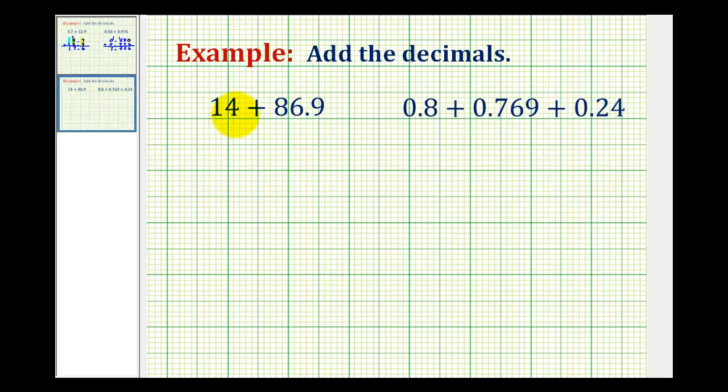In this example notice we have a whole number and a decimal. Just remember for a whole number the decimal would be right here after the four. This will help us write the problem vertically. So we'll have fourteen, I'll go ahead and put the decimal point in there.